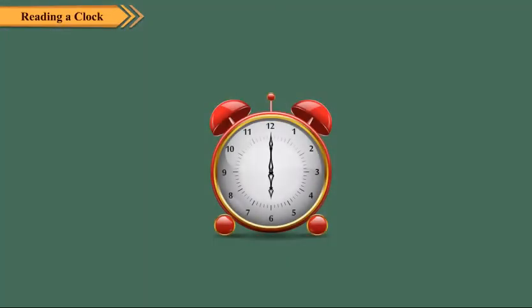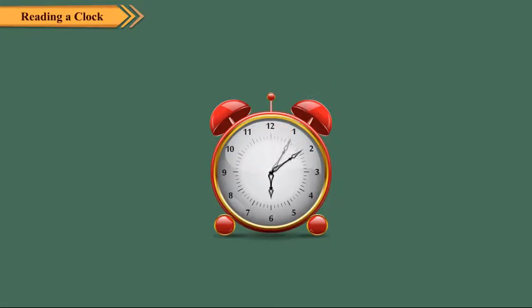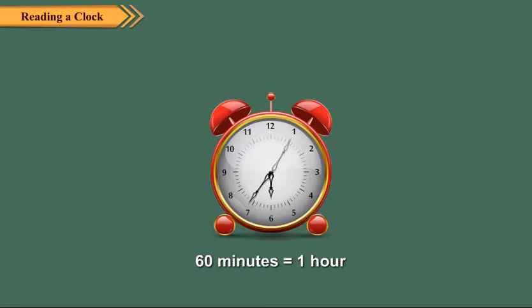The shorter hand is called the minute hand. It moves slower than the second hand. It takes 5 minutes to move from one number to another. It completes one round of the dial in 60 minutes, or 1 hour.